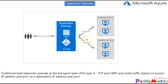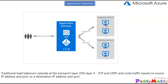Application Gateway can make routing decisions based on attributes of an HTTP request. For example, if a user browses contoso.com/images, the request will be routed to a specific set of servers known as the image server pool. And if a user browses contoso.com/videos, Application Gateway understands the different URL and automatically sends the traffic at Layer 7 to the video server pool.